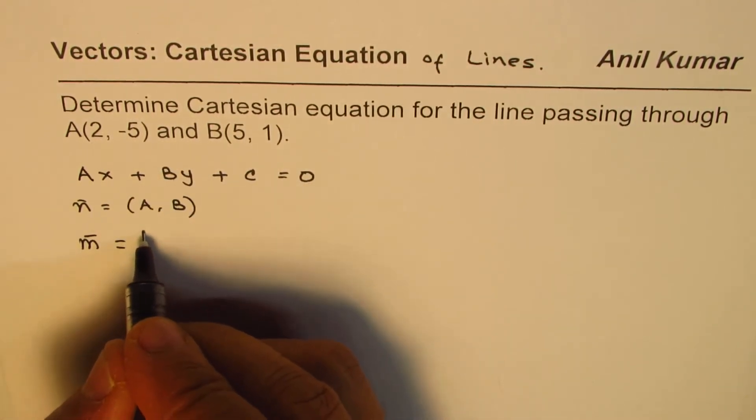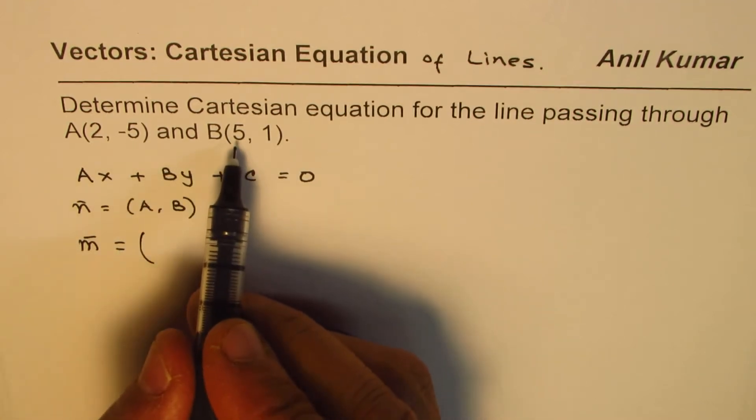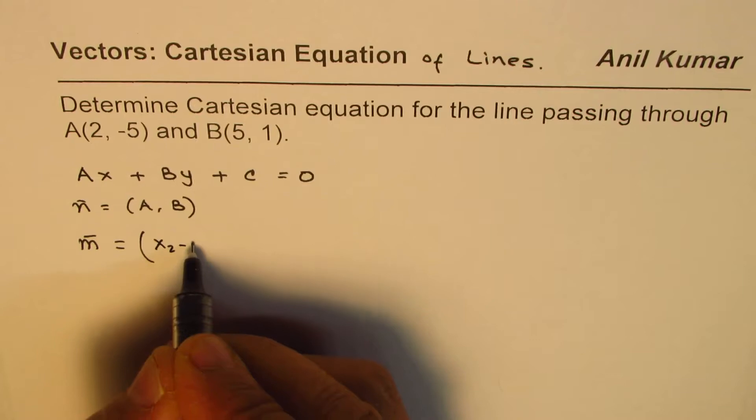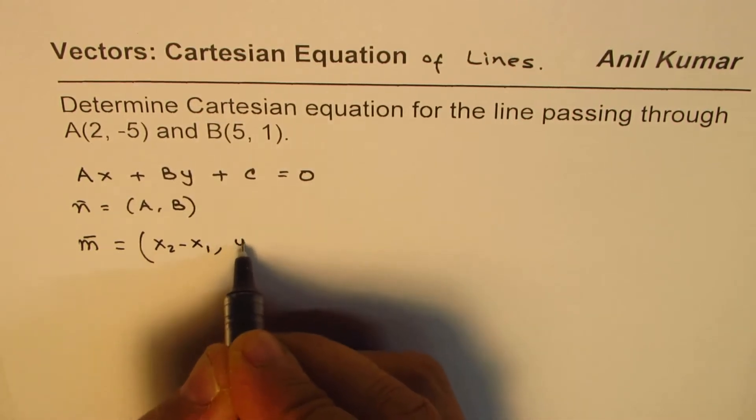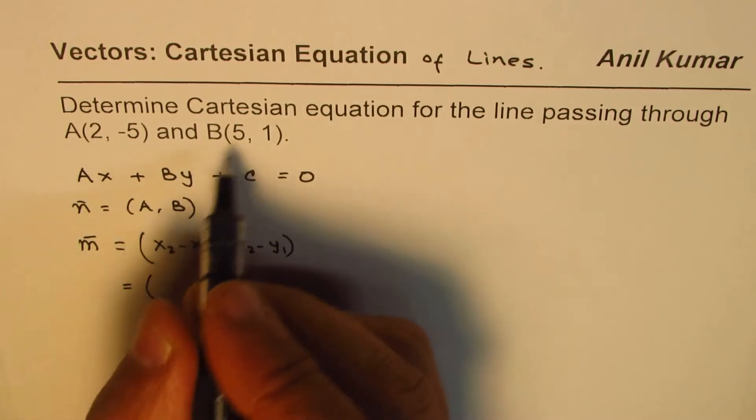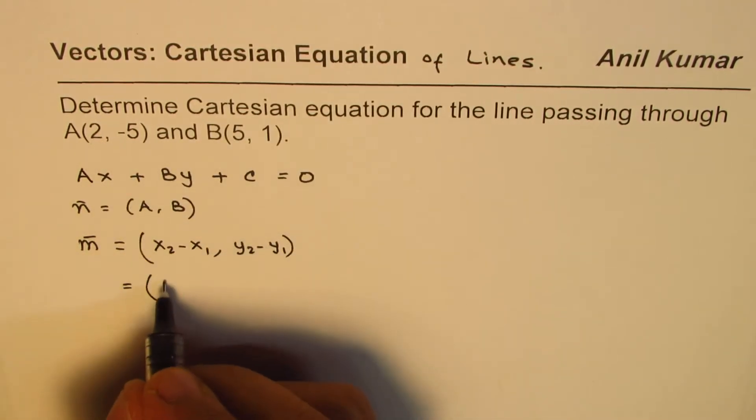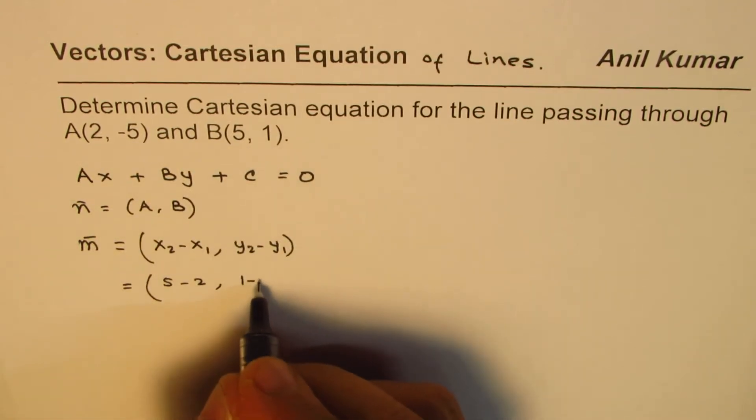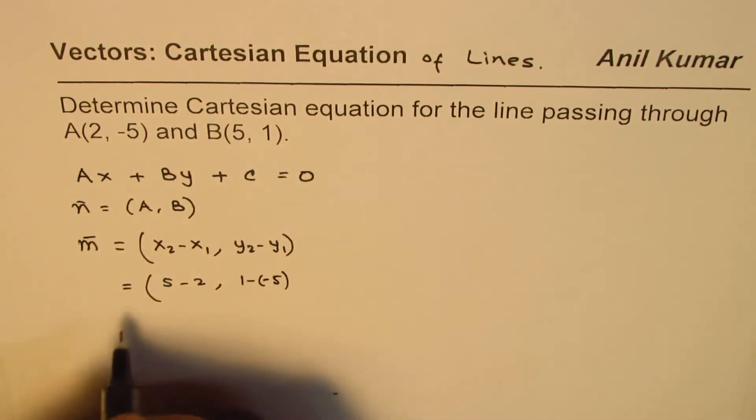So direction vector will be in our case X2 - X1, Y2 - Y1. So in our case the direction vector is 5 - 2, 1 - (-5).